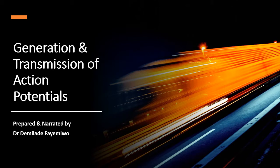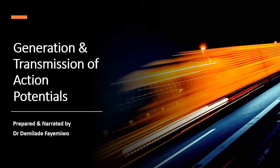Let us get into Transmission of Action Potentials. In the last video, which I hope you have watched before this one, I mentioned that nerve impulses are transmitted as electrical impulses. It is important to note that this is not the same as electric current. Electric current has to do with the flow of electrons, whereas nerve impulses are mostly due to a difference in charge across the membrane of the cell.